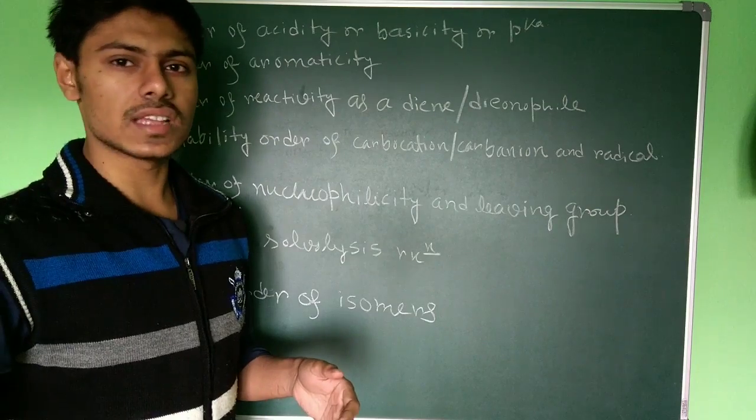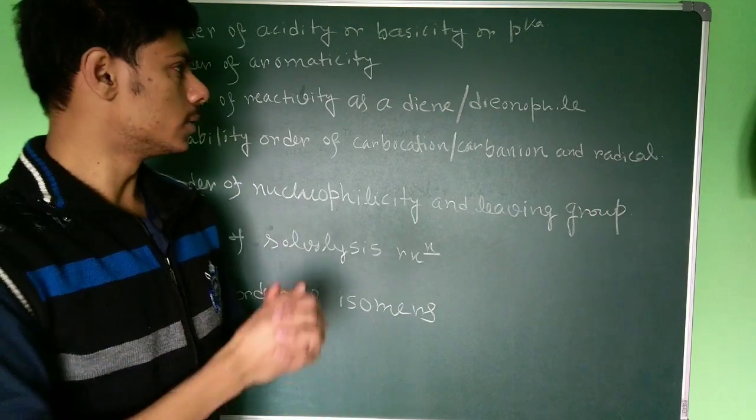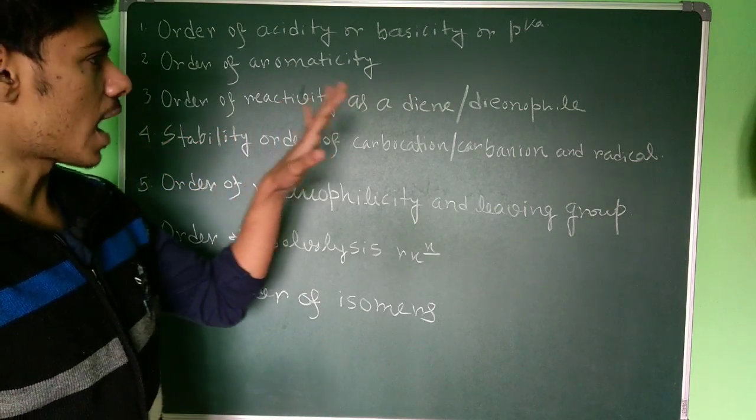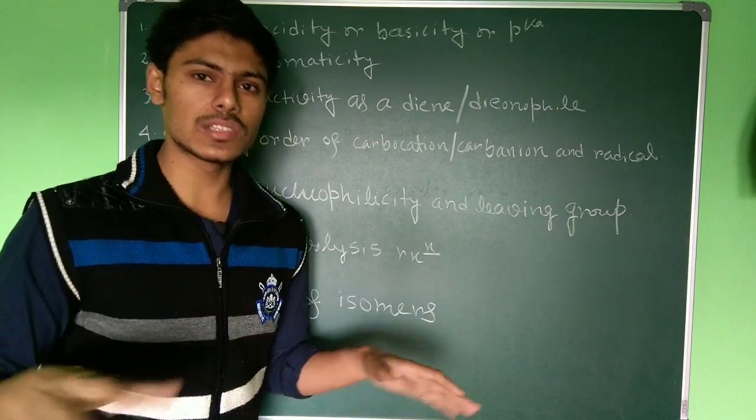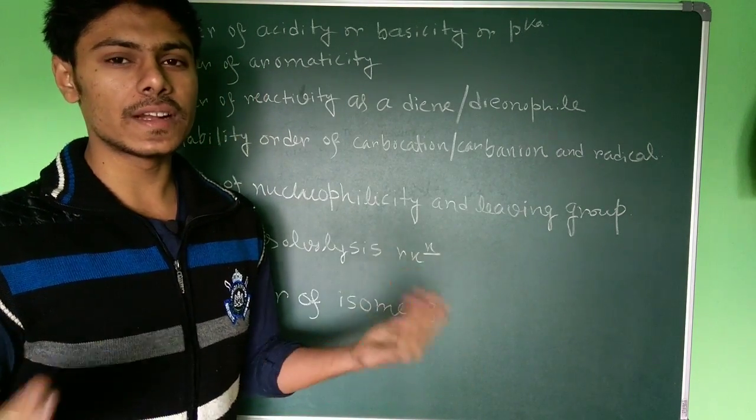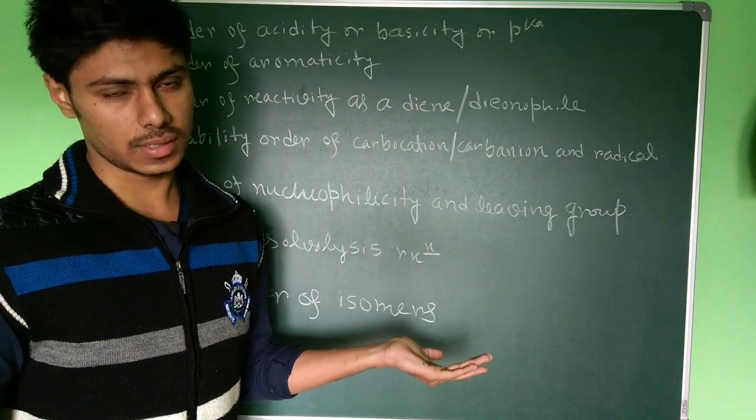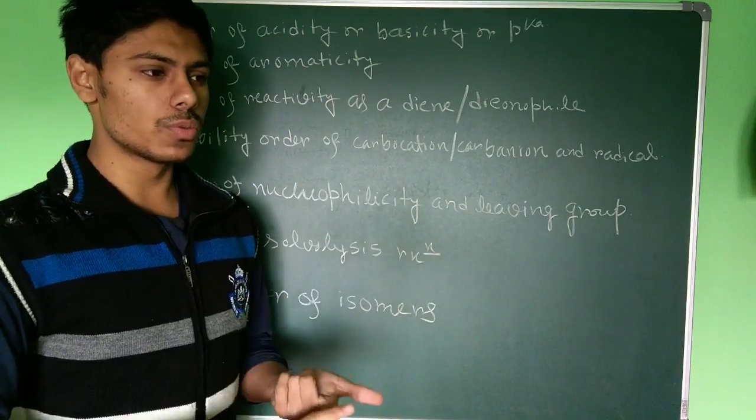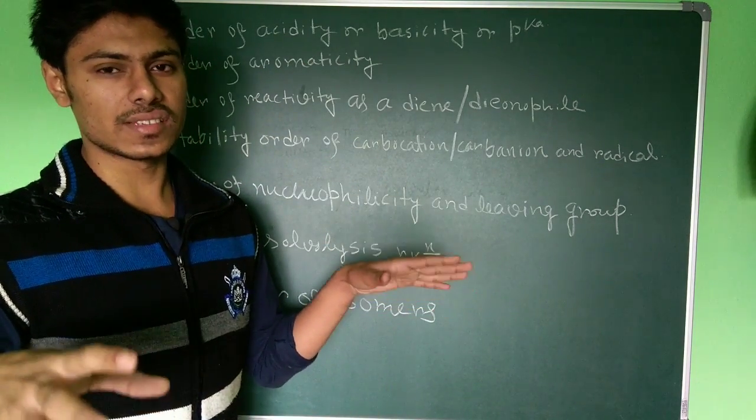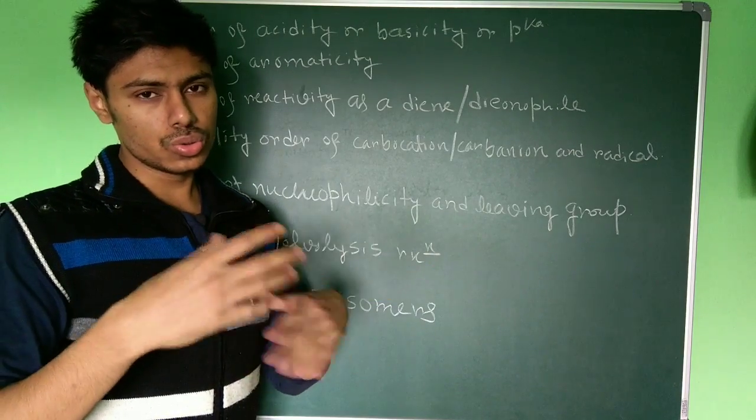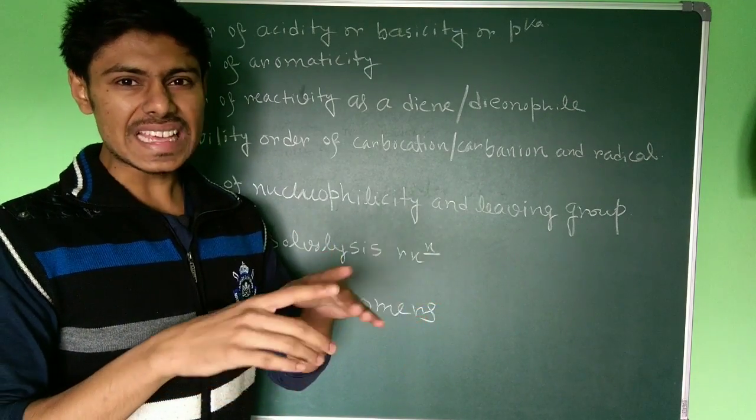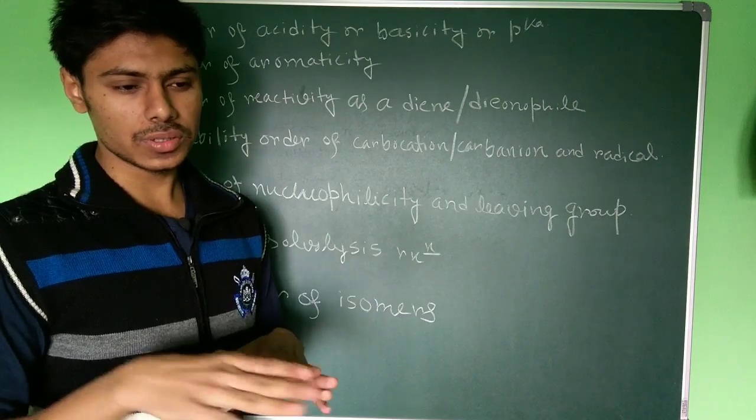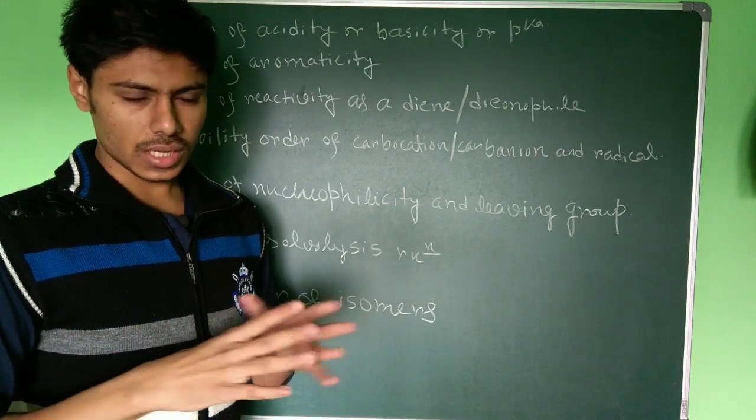The third is the order of reactivity as diene and dienophile. If you know about Diels-Alder reaction, you will know that different dienes and different dienophiles have different reactivity. Their electronic substitution, like the substitution by electron-withdrawing groups or the effect of steric hindrances. You know that to do Diels-Alder reaction, dienes must be in the cis configuration or s-cis conformation.